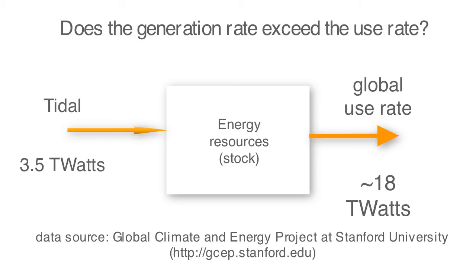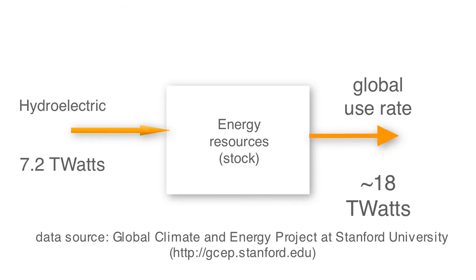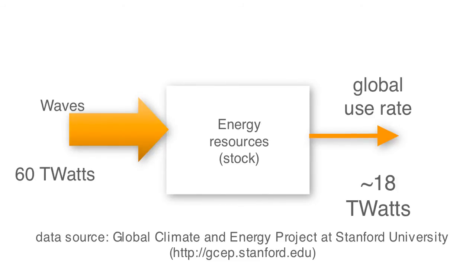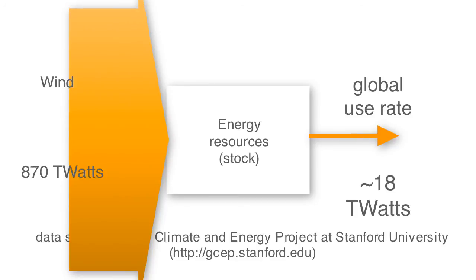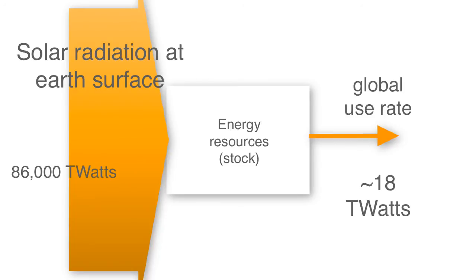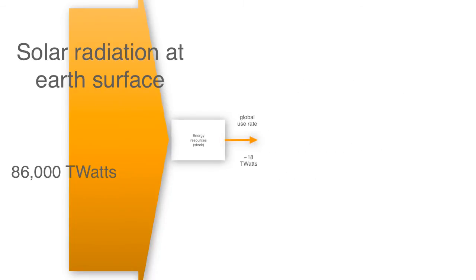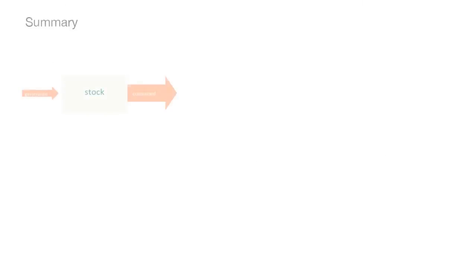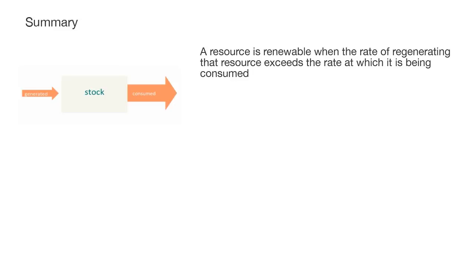What about the regeneration rate from different renewable resources? Tidal energy provides about 3.5 terawatts, hydroelectric about 7.2 terawatts, geothermal 32 terawatts, waves 60 terawatts, wind energy 870 terawatts, and incoming solar radiation 86,000 terawatts. While these arrows aren't exactly to scale, you can see that the regeneration rate greatly exceeds the use rate for these different types of energy resources.